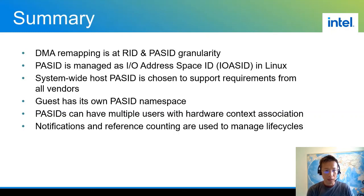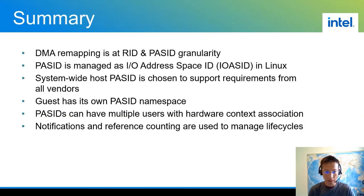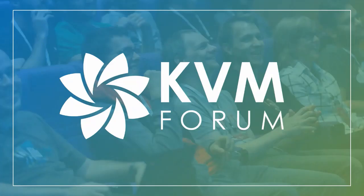Let's summarize what we covered today. We talked about DMA requests with PASID — with remapping, this is done at the request ID and PASID granularity. PASID in Linux is managed by the IOACID core. We don't support multiple namespaces for PASID on the host. The guest also has its own PASID namespace. PASIDs could have multiple users each with hardware context association, so we must synchronize them during setup and tear-down, using notification and reference counting to manage the life cycles. Thank you for your attention, and Yi and I are ready for questions and more discussions on the two open questions we have.